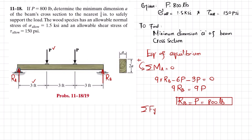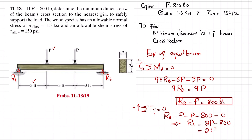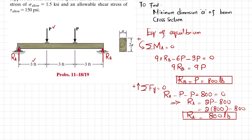Now find Ra using the vertical force equilibrium: the sum of all vertical forces equals zero. Ra minus P minus P plus Rb equals zero, so Ra = 2P minus Rb. With P = 1800 and Rb = 1800, Ra also equals 1800 pounds. Now we have both Ra and Rb and can draw the shear force and bending moment diagrams.